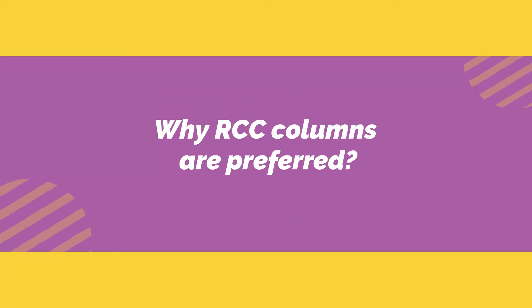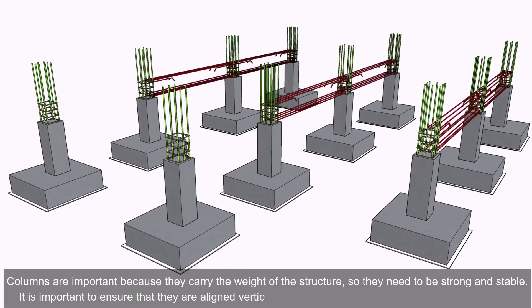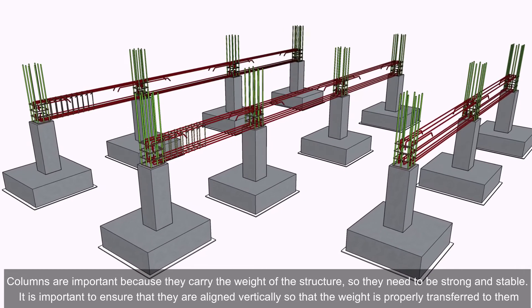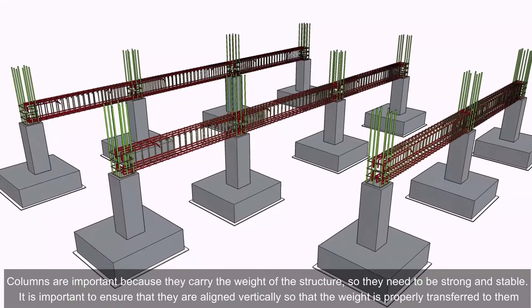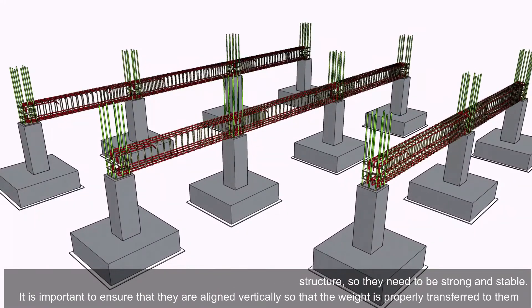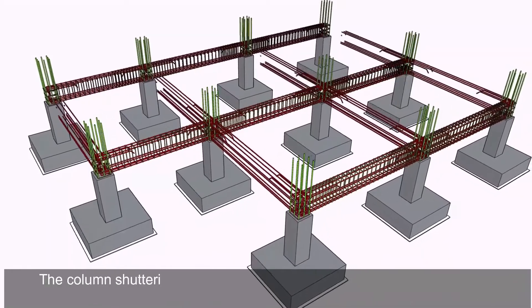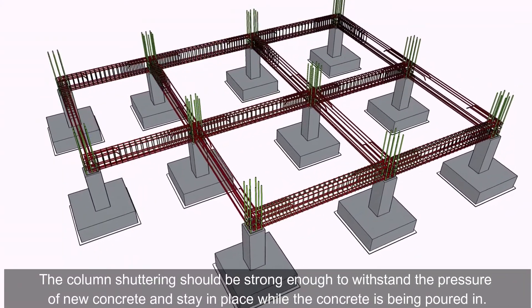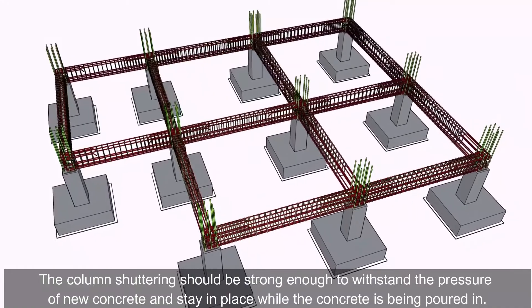Why are RCC columns preferred? Columns are important because they carry the weight of the structure, so they need to be strong and stable. It is important to ensure that they are aligned vertically so that the weight is properly transferred. The column shuttering should be strong enough to withstand the pressure of fresh concrete and stay in place while the concrete is being poured.